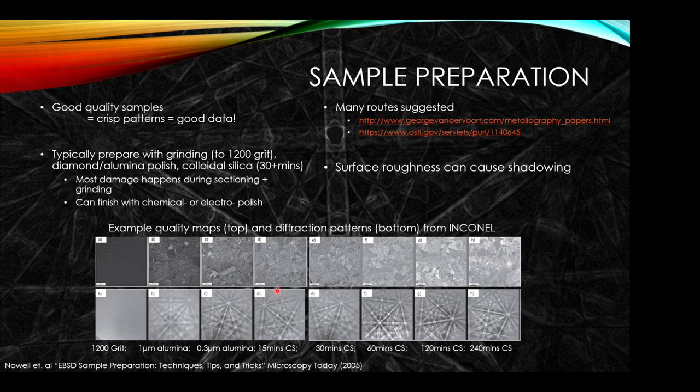Do note that even at an early stage you may be able to get something like the texture out. A relatively short polish can give you a good quality map for some experiments. This is finishing with a colloidal silica step, but you could finish with a variety of approaches and we'll discuss them very shortly on the next slide.